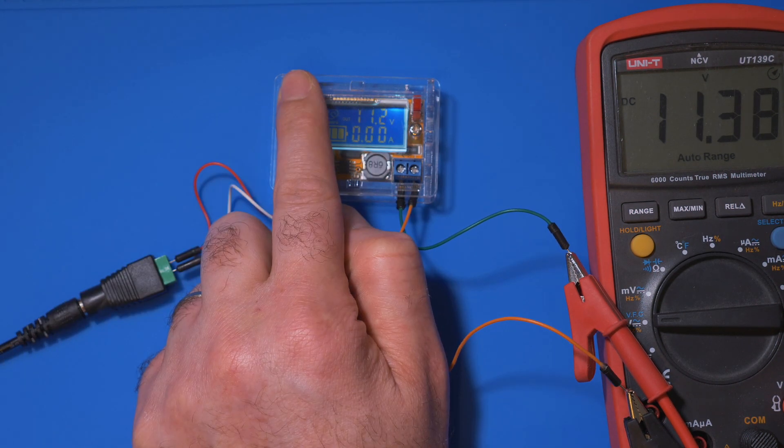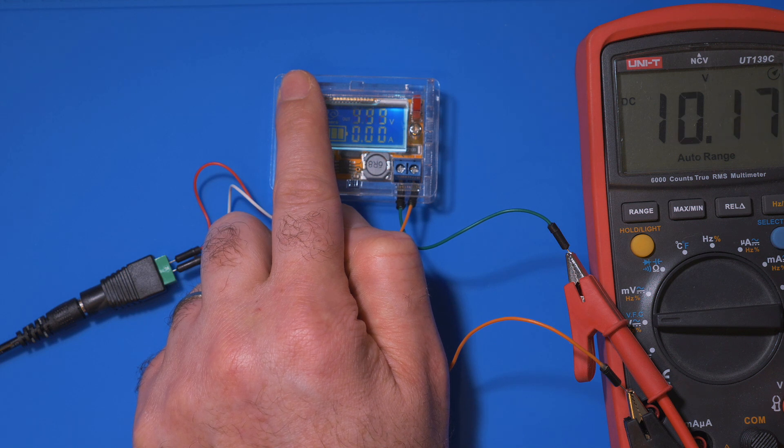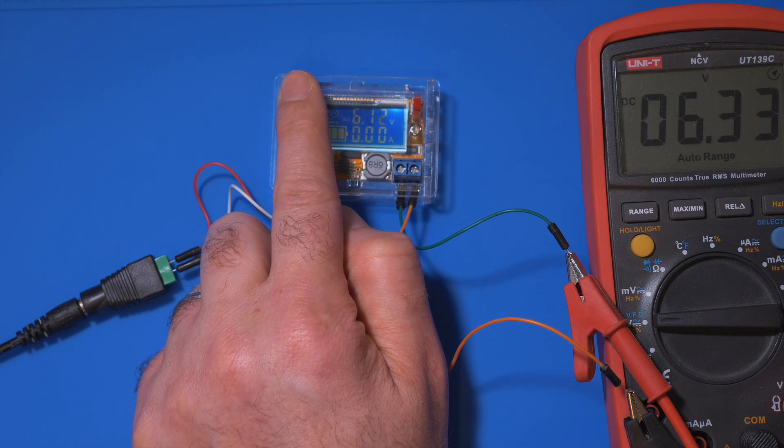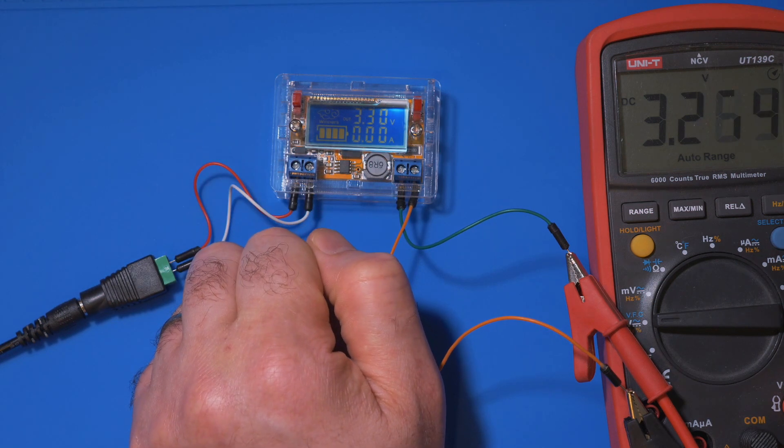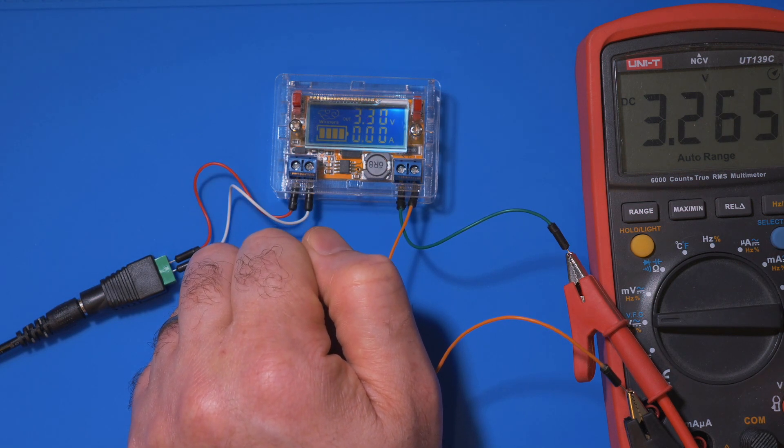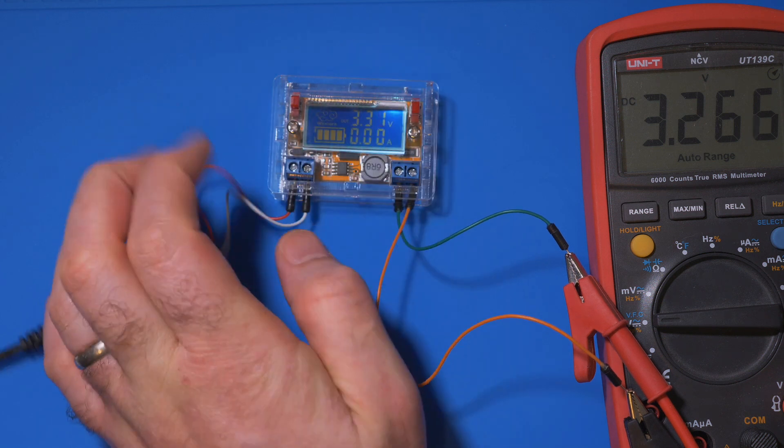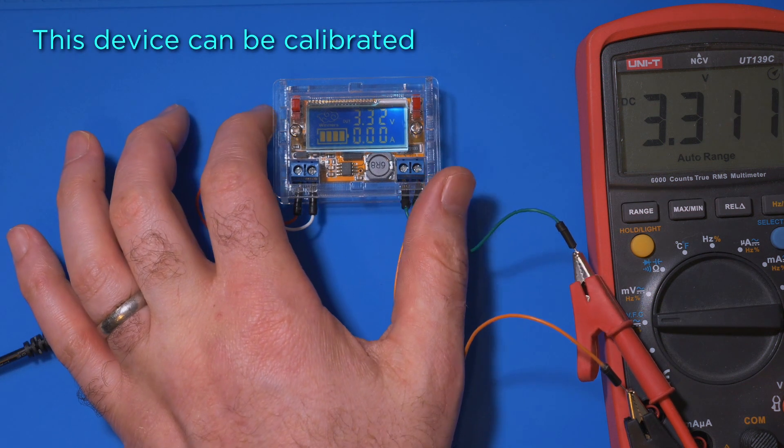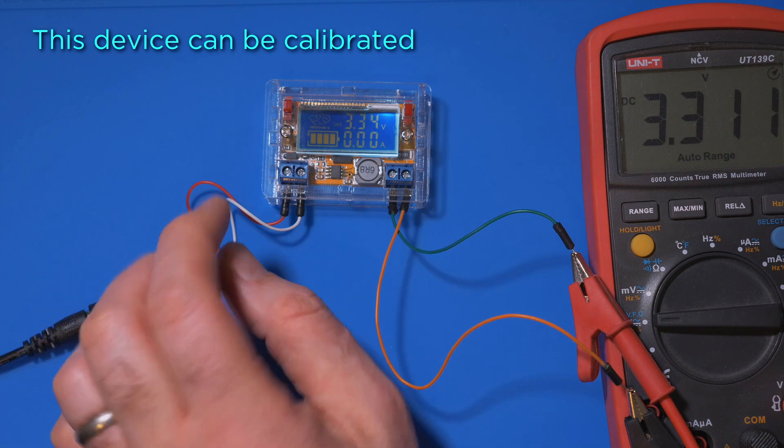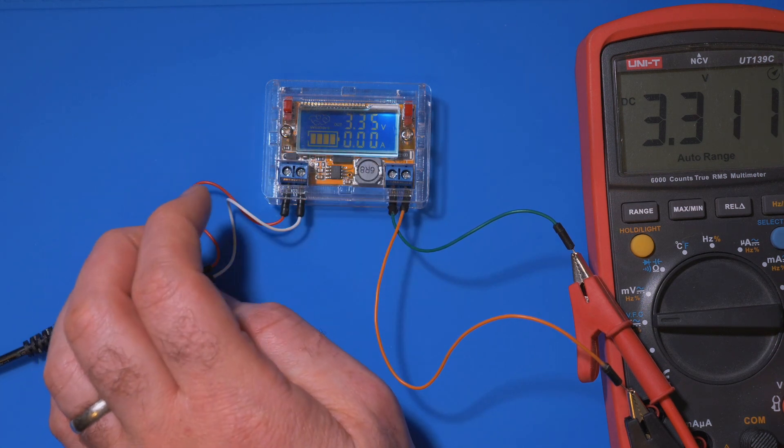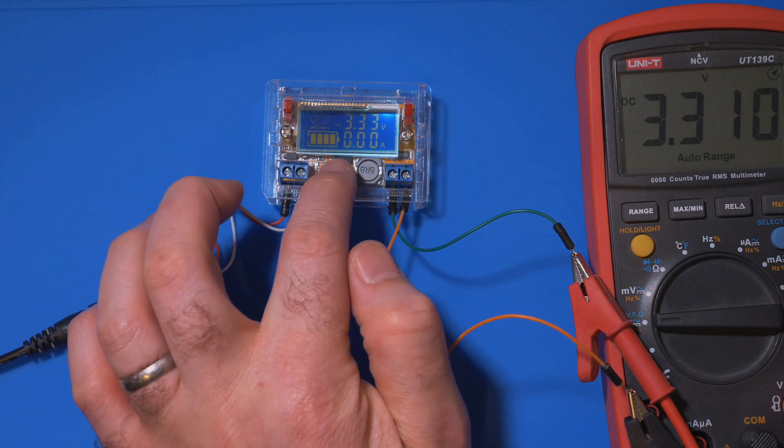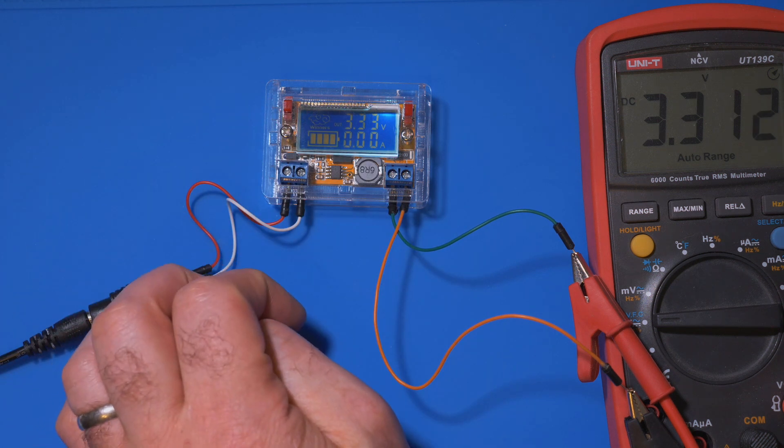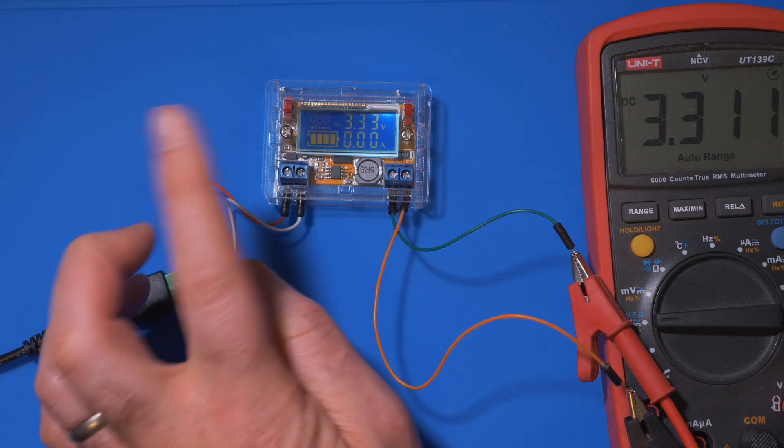So let's bring this down and get it down to 3.3 volts. There we go. 3.3 volts. It's a little bit off there. But there we go. Let's just bring it up to 3.32, which is close enough. It is perfectly good enough for our projects. And this can handle up to 3 amps output. So it's going to be more than enough for the majority of your projects on your bench.